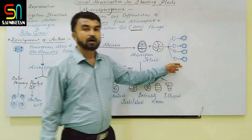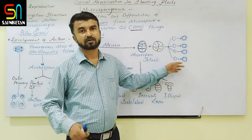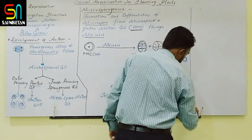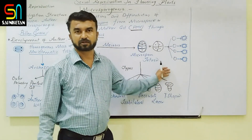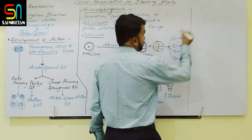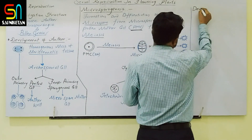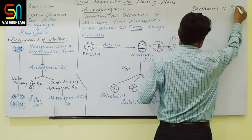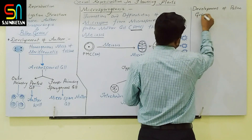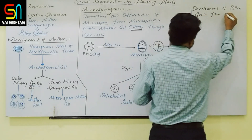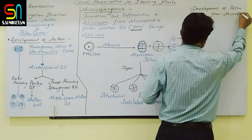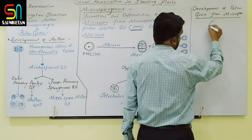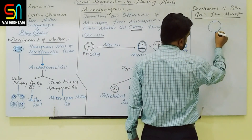The next heading is pollen grain — how pollen grains mature, their structure, and importance. First, how does a microspore develop into a pollen grain? This is pictorially given in the textbook. The microspore is haploid, containing a single set of chromosomes, and has a nucleus surrounded by a membrane.